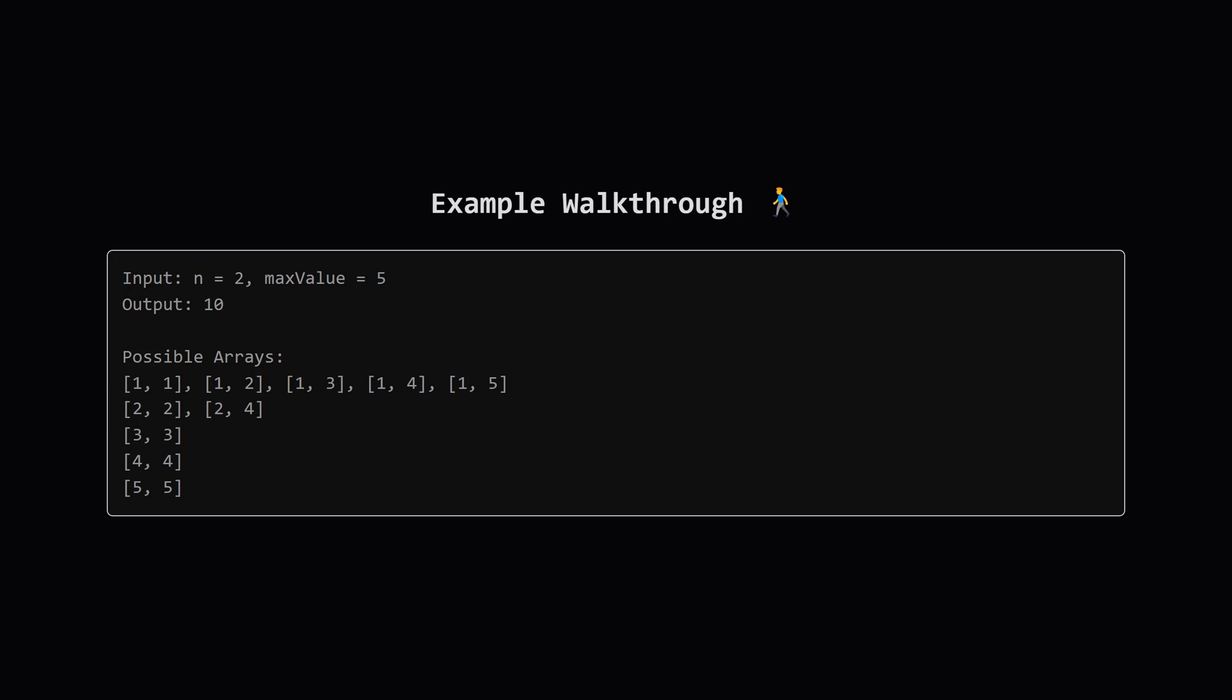What if the first number is 2? The second number must be divisible by 2 and no bigger than 5. So the second number could be 2 itself or 4. That's 2 more arrays: [2,2], [2,4]. If the first number is 3, the second must be divisible by 3, up to 5. Only 3 works: [3,3]. If the first is 4, only 4 works: [4,4]. If the first is 5, only 5 works: [5,5].